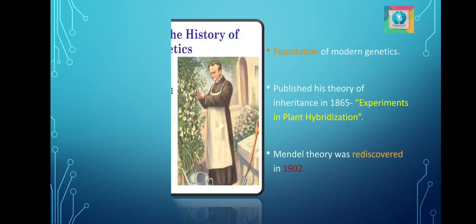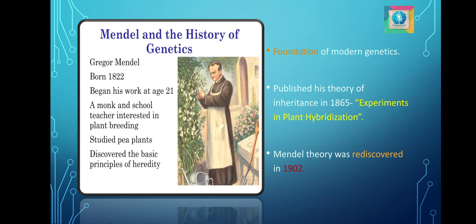Gregor Mendel was born in a German-speaking family on 20th July 1822. He was a monk and taught natural sciences in the monastery school in Brunn, Austria. He presented the data and conclusions about genetics in his paper, Experiments in Plant Hybridization, in 1865. For his experiment, he selected garden pea. The reason for selection was that numerous varieties of the garden pea with many different traits were available. Due to his tremendous work, he is known as the father of genetics and his work was rediscovered in the year 1902.